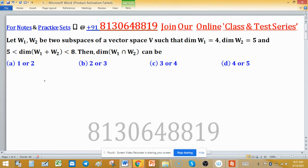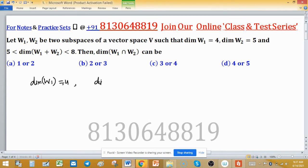Now dimension of W₁ is 4, dimension of W₂ is 5, and dimension of W₁ plus W₂ lies between 8 and 5. Then asked about dimension of intersection.